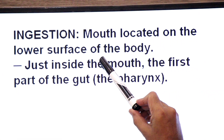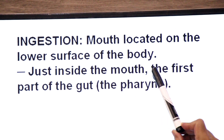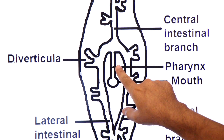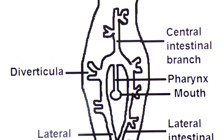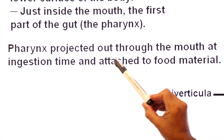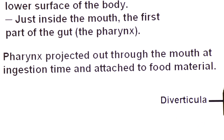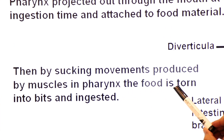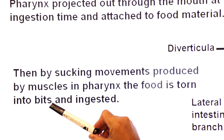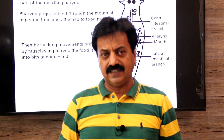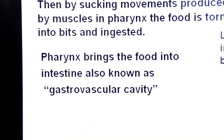The mouth is located on the lower surface of the body. Just inside the mouth is the pharynx — the first part of the digestive system. The pharynx is projected out through the mouth at the time of ingestion, gets attached to the food material, and by the sucking movement produced by muscles in the pharynx, the food is torn and broken into smaller pieces called bits. This extracellular process draws the food inside.